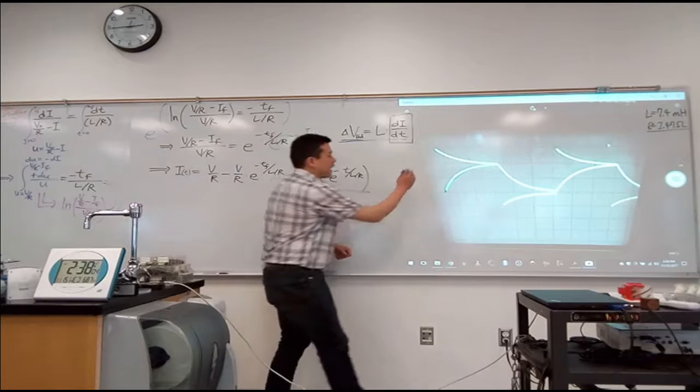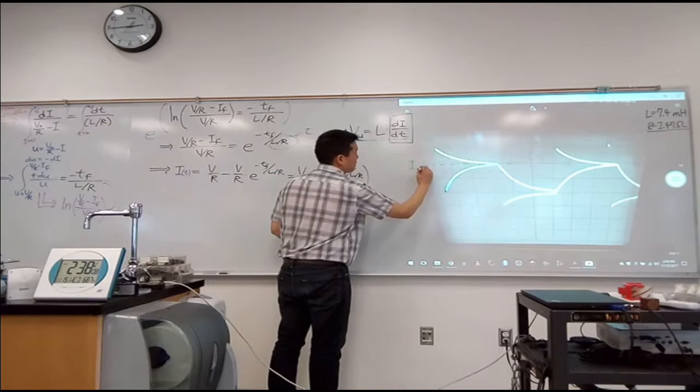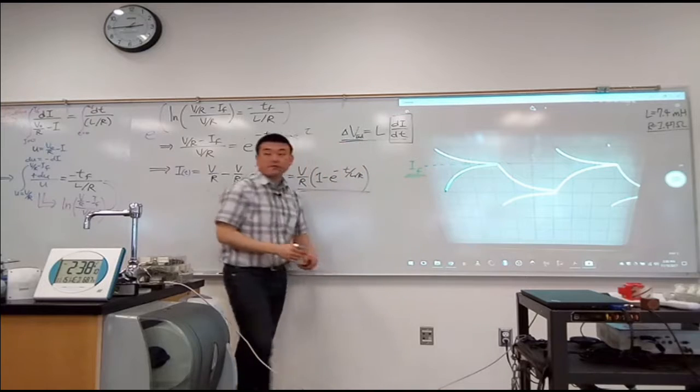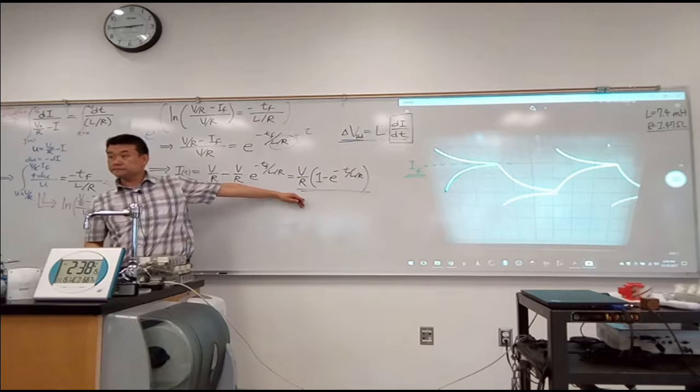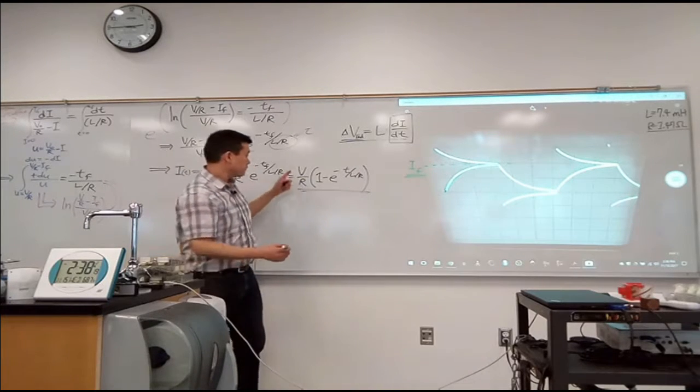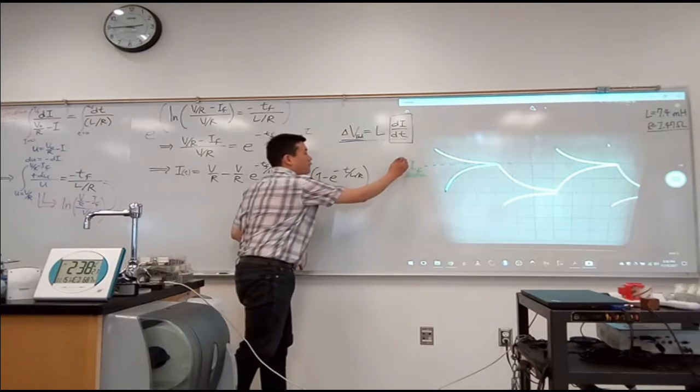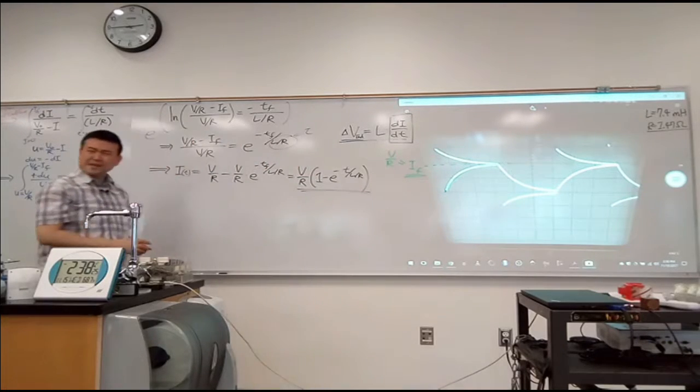What's the asymptotic value of current? What's this asymptotic value of final value of current when you look at this expression? V over R, right? So voltage of the battery divided by the resistance of the resistor. Does that make sense?